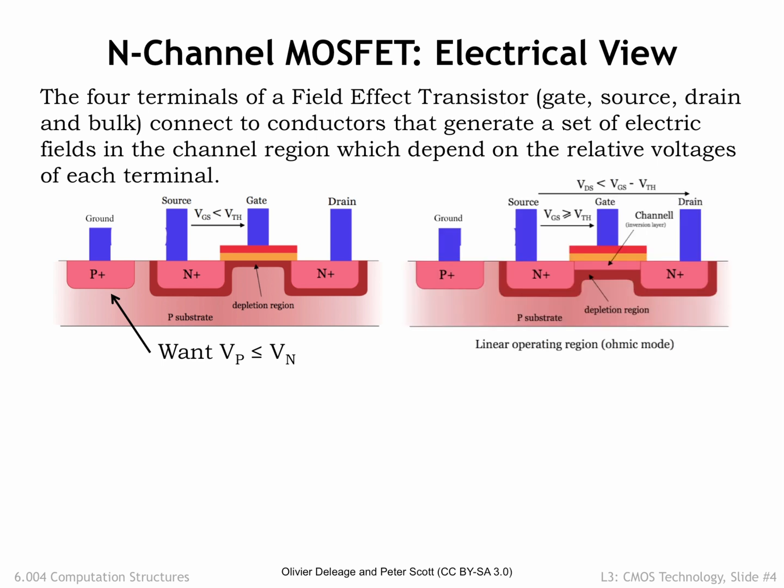Now as VGS gets larger, positive charges accumulate on the gate conductor and generate an electrical field which attracts the electrons in the atoms in the substrate. For a while, that attractive force gets larger without much happening. But when it reaches the MOSFET's threshold voltage, the field is strong enough to pull the substrate electrons from the valence band into the conduction band, and the newly mobile electrons will move towards the gate conductor, collecting just under the thin oxide that serves as the gate capacitor's insulator.